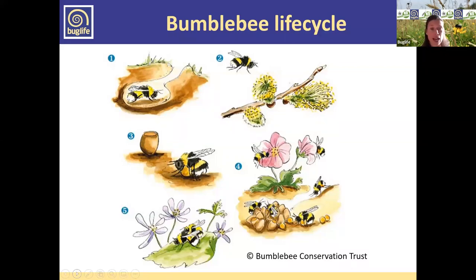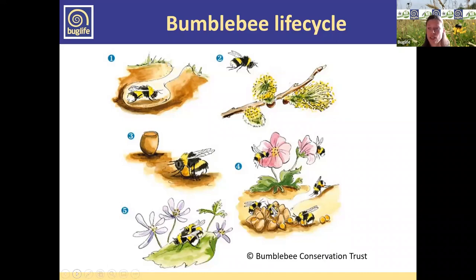There's also a wax cup that she creates, which she fills with regurgitated nectar and feeds on while she sits and broods the eggs. She might occasionally leave the nest to collect pollen and nectar, but generally she just sits there alone. Then this first batch of bees hatches — the grubs eat that ball of pollen the queen provided. After several weeks they pupate and the worker bees emerge, and all of these workers will be female.